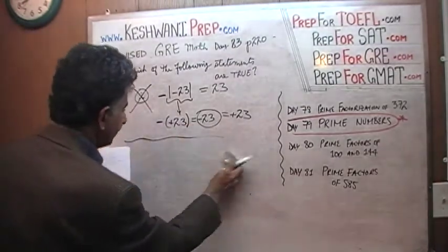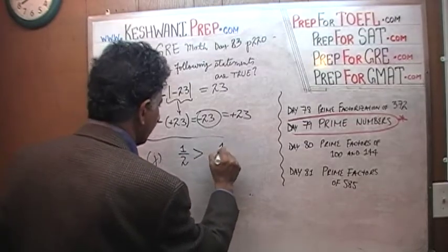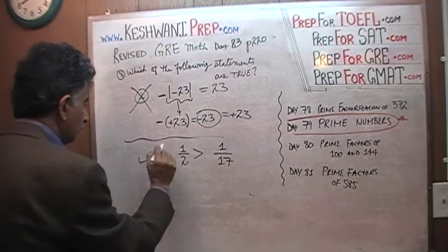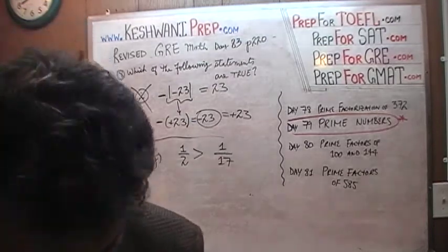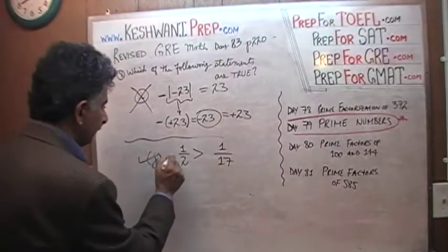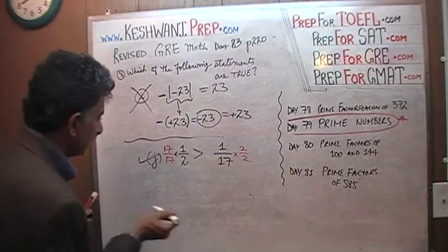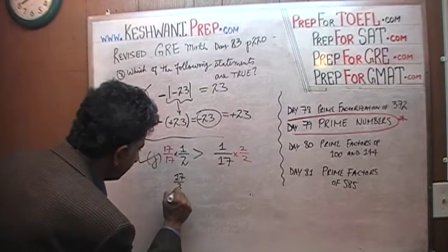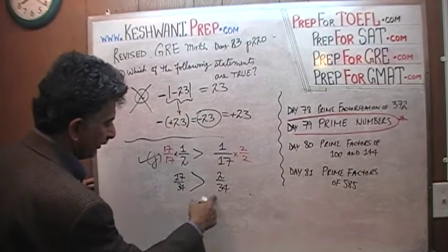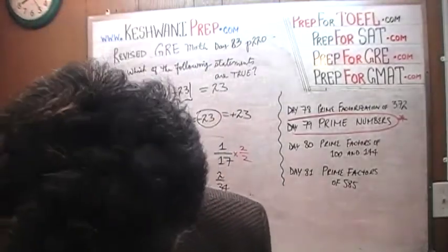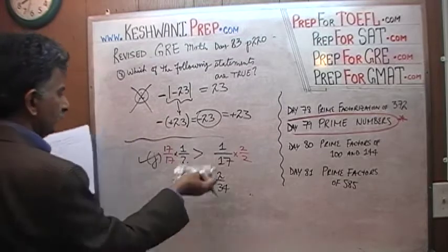Statement J says 1/2 is greater than 1/17, which of course is true. 1/2 is greater than 1/17 because 17 is a much larger denominator. If you want to verify: find a common denominator of 34. Multiply 1/2 by 17/17 to get 17/34, and multiply 1/17 by 2/2 to get 2/34. You can immediately see 17/34 is greater than 2/34. J is true. It's very obvious — 1/17th is not even 1/16th, it's 1/17th for crying out loud.